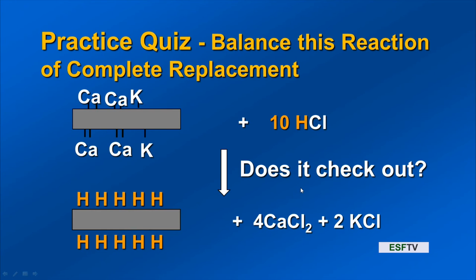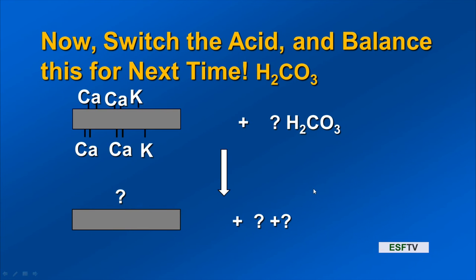Now what if we switch the acid and use carbonic acid? Why carbonic acid? It's a weak acid and it's predominant in soil where we generate a lot of carbon dioxide. For next time when I return from my trip, I will ask you on that Monday lecture to show me the answer to this question.